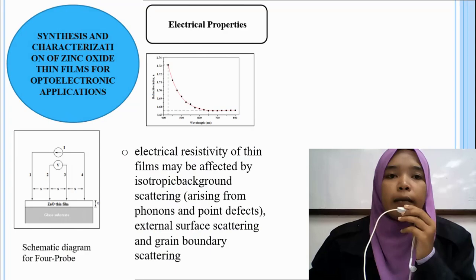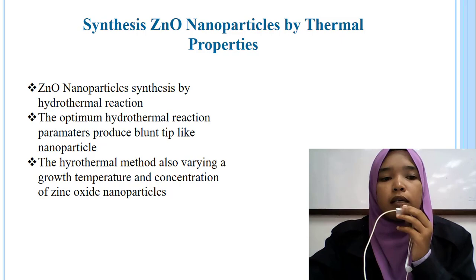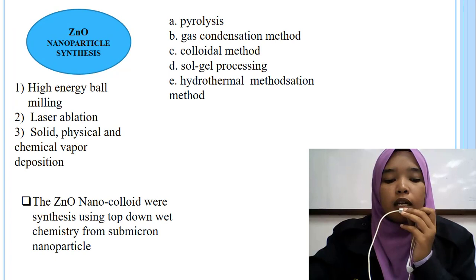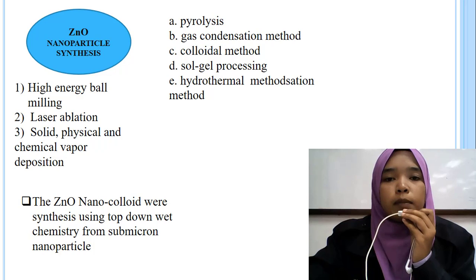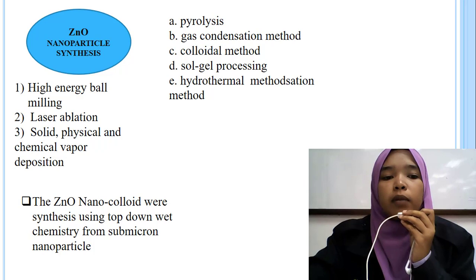For synthesis of ZnO nanoparticles and their thermal properties, the hydrothermal reaction produces blunt-type nanoparticles under optimum parameters, varying deposition temperature and concentration. ZnO nanoparticles can be synthesized using several methods: spray pyrolysis, gas condensation method, colloidal method, sol-gel processing, hydrothermal method, and mechanochemical method. They can also be synthesized by high-energy ball milling, laser ablation, solid-state reaction, and physical and chemical vapour deposition. ZnO nanoparticles were also synthesized using top-down wet chemistry from sub-micron nanoparticles.